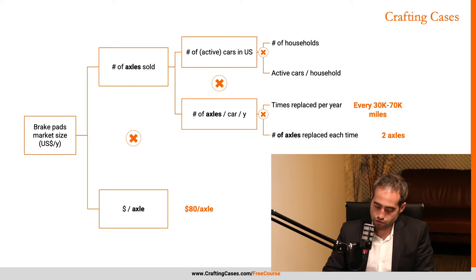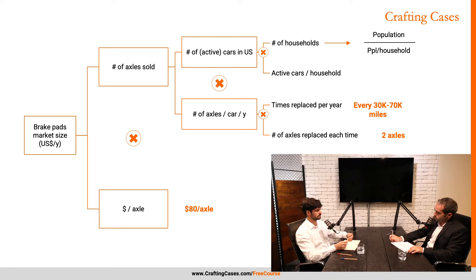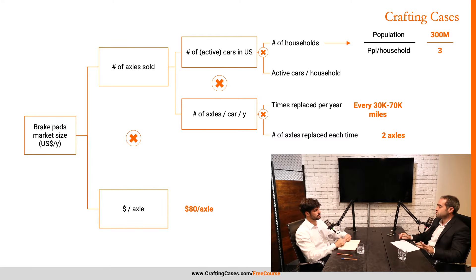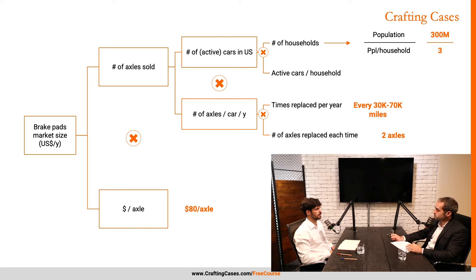For population, there are about 300 million people in the US. And I would assume there are three people per household on average — lots of single-person households, also lots of households with a couple and three kids. Is three a good average? Yeah, three sounds okay — it's actually a little bit less than three, but you can go with three. Okay, I'll go with three then.